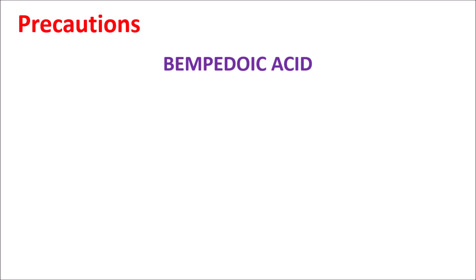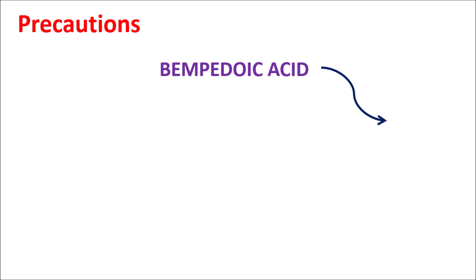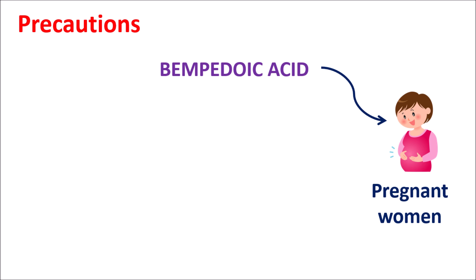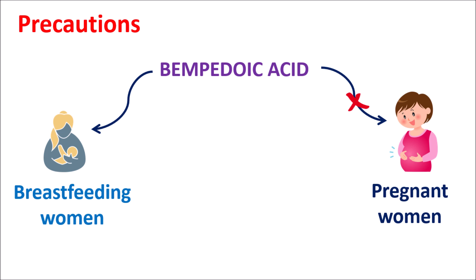We have already discussed that Bempedoic acid can be combined with statins, but during this combination the dose of statins should be lowered, otherwise it can produce very serious side effects because Bempedoic acid can increase the levels of statins, which may lead to myopathy. For instance, simvastatin should be used at a dose less than or equal to 20 mg with Bempedoic acid. Similarly, pravastatin should be used at a dose less than or equal to 40 mg — above this dose it should not be combined with Bempedoic acid. This medication is also not proved safe in pregnant or breastfeeding women, so it is not recommended in such cases.